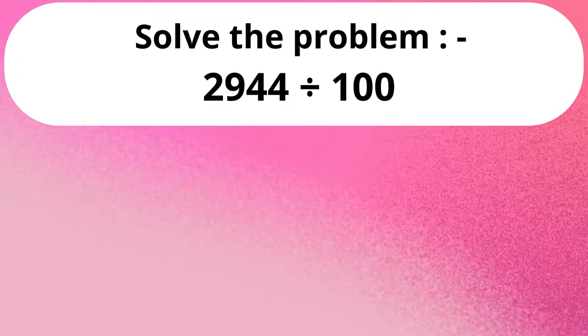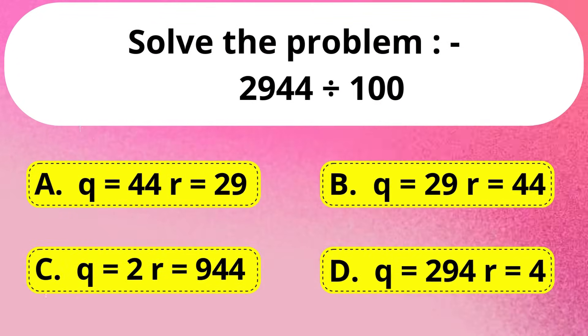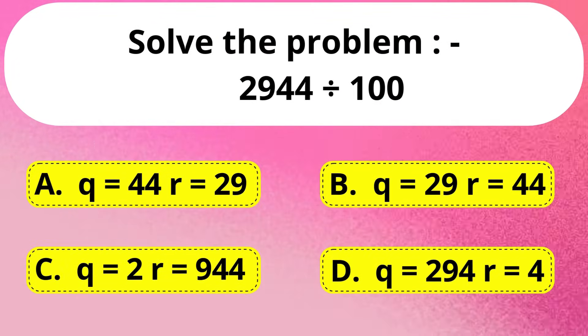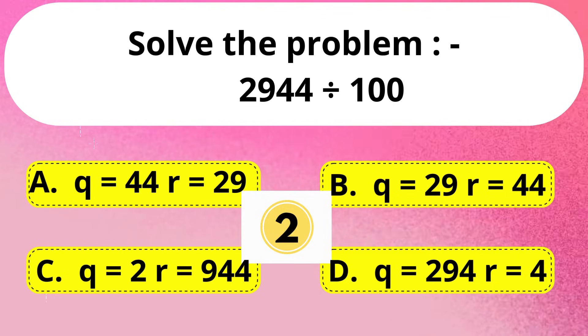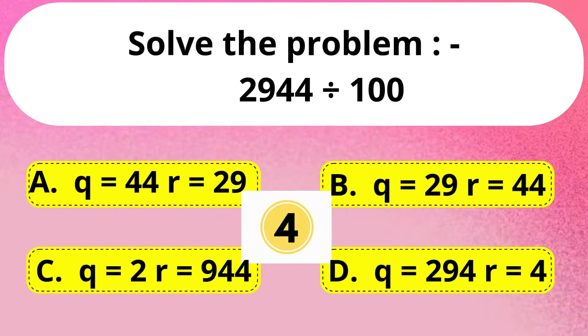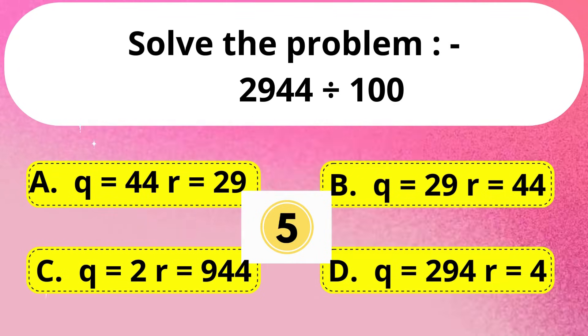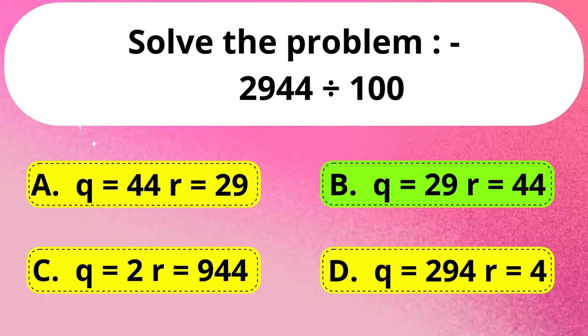Next question. Solve the problem: 2944 divided by 100 is equal to? Answer is Option B: quotient is 29 and remainder is 44.